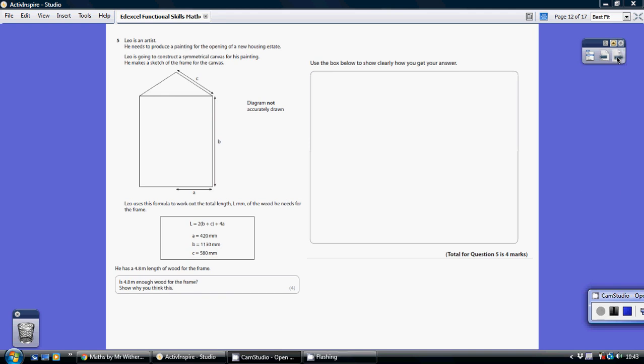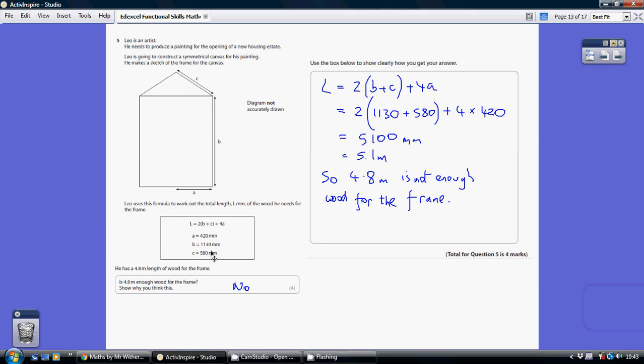Question five. So we've just got to substitute these numbers into the formula. So L is two lots of B plus C plus four lots of A. Now we know that B is 1130 and we have to add on